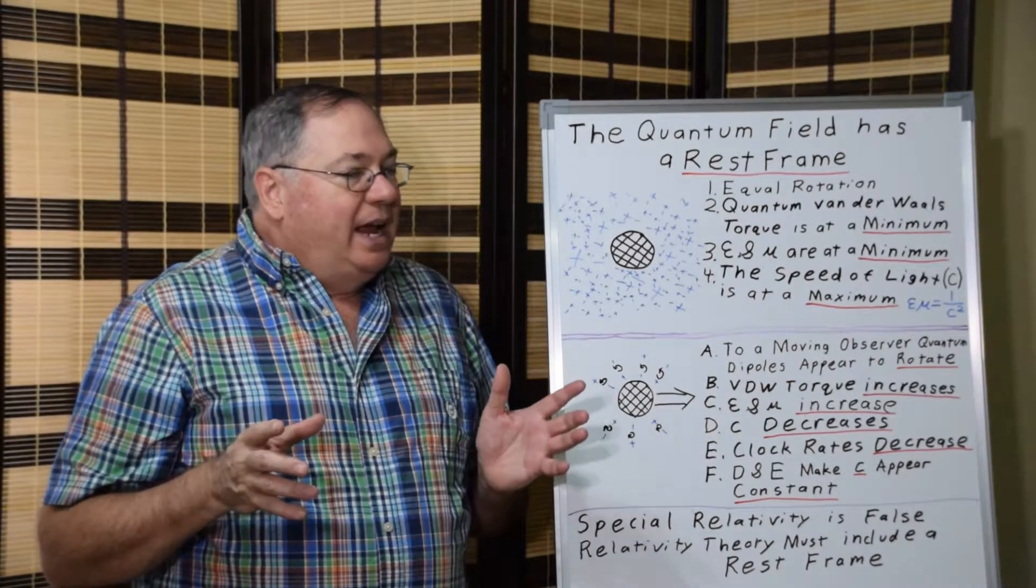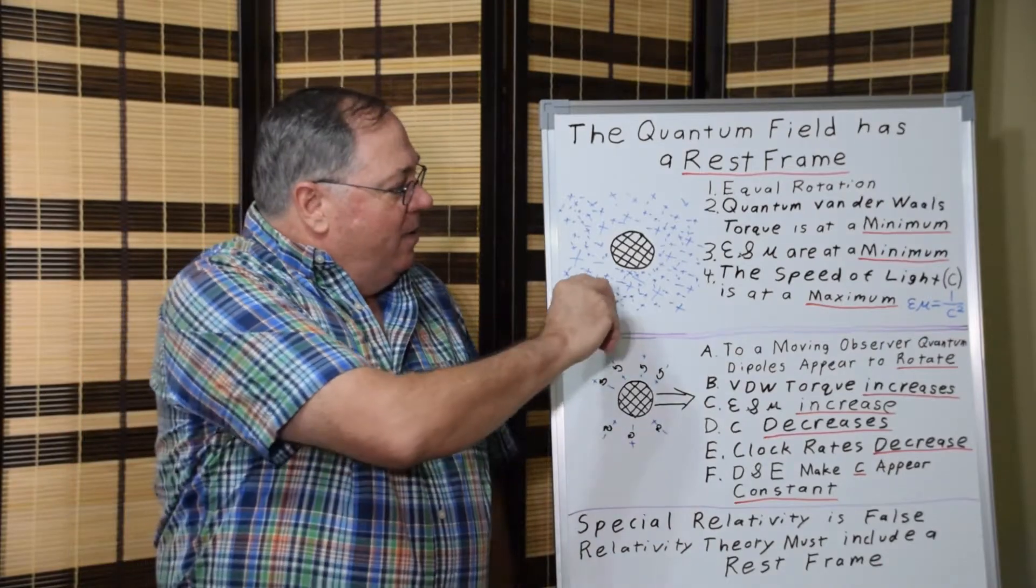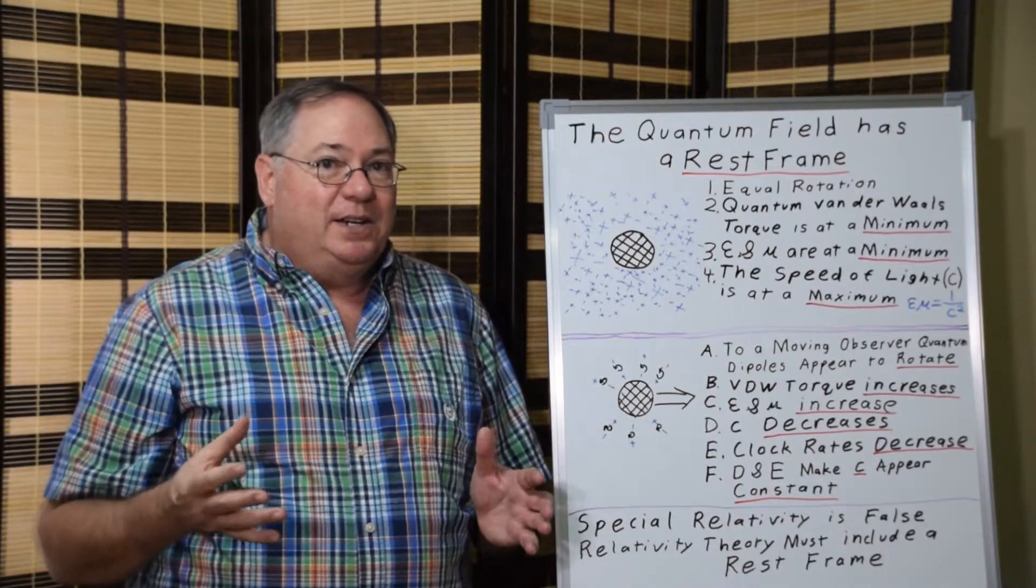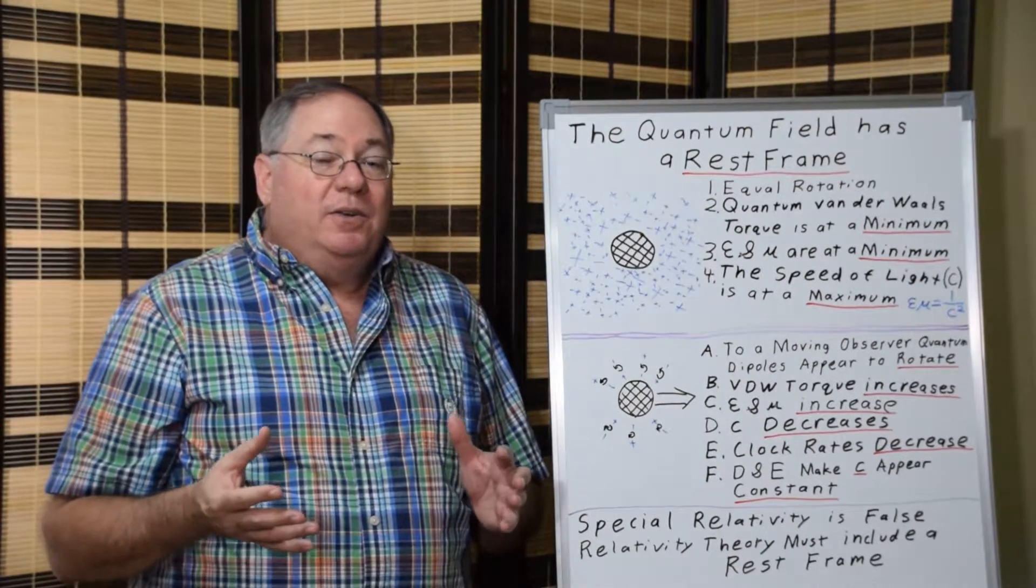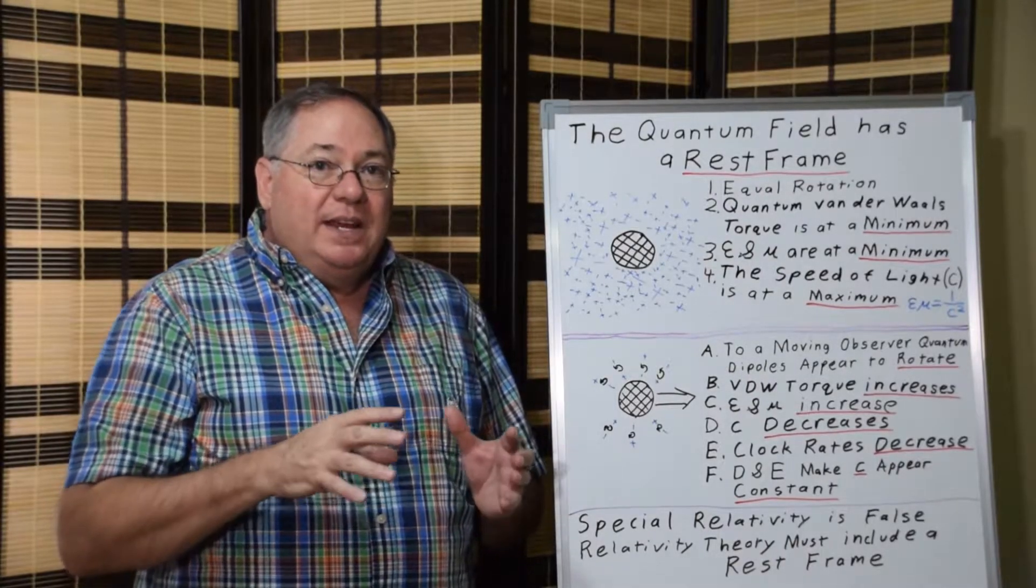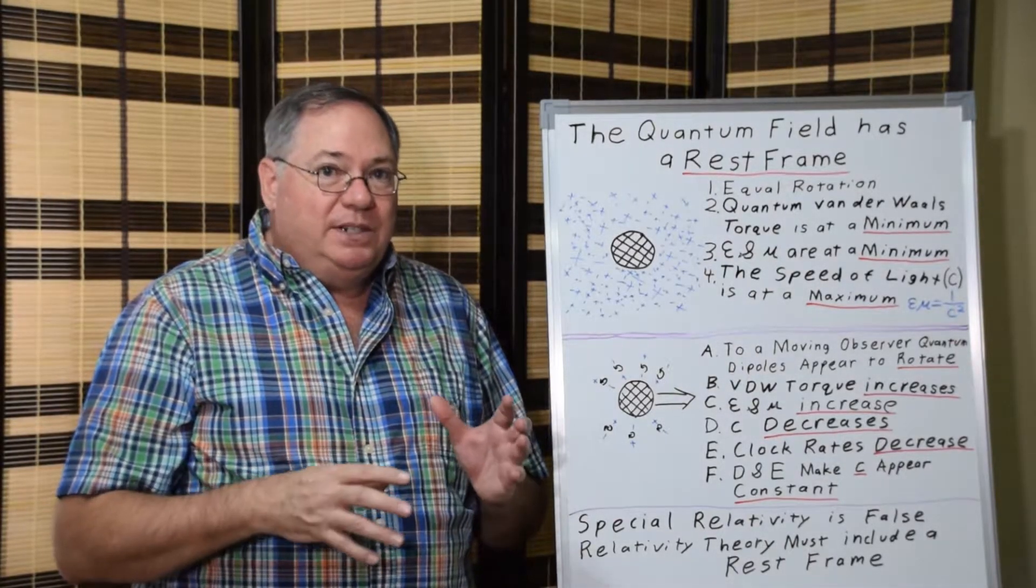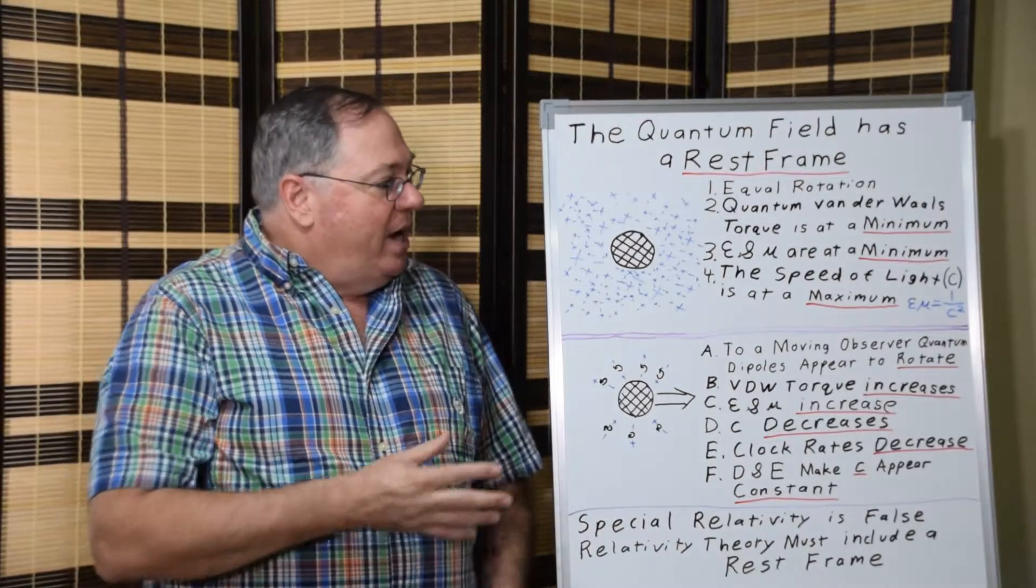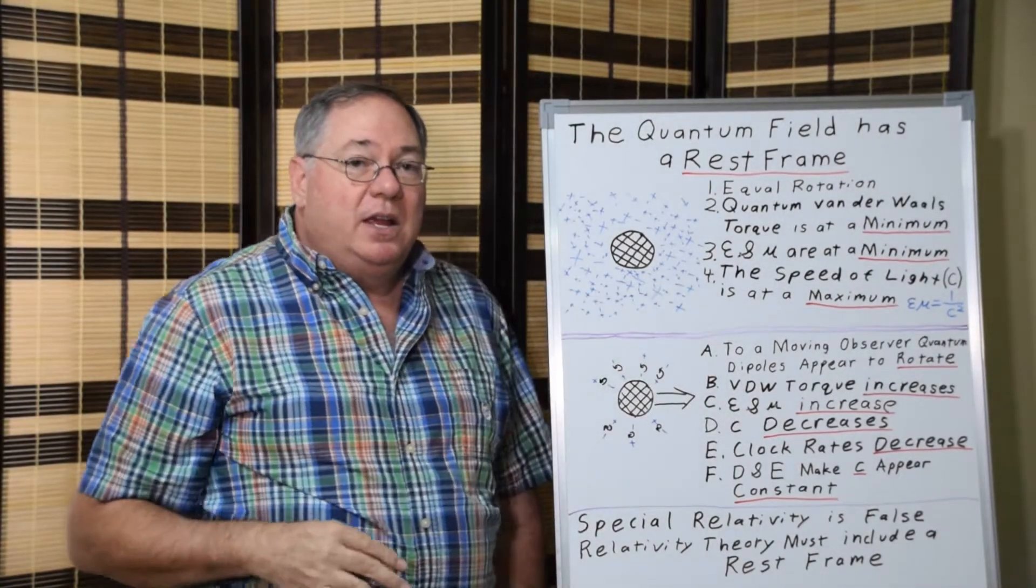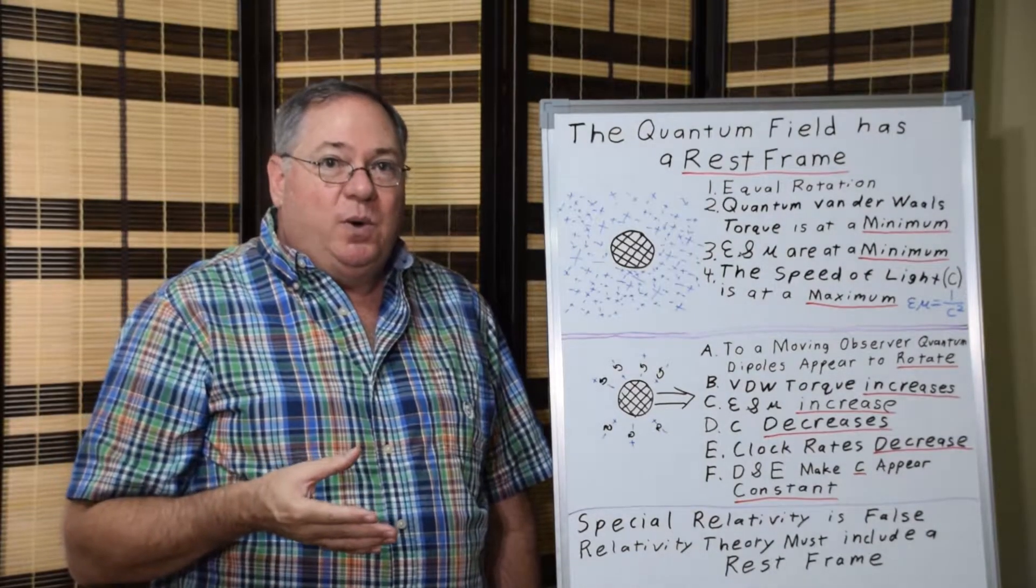It also has a torque where when one dipole rotates, the dipoles around it have a tendency to want to rotate. But their natural tendency is to not move, and so the existence of all these dipoles resists rotation. Any form of rotation or motion or linear motion causes an increase in torque locally.